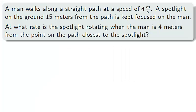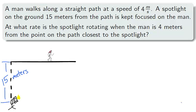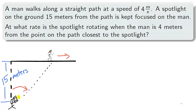Let's begin with a diagram. We begin with a man who's walking along a straight path. A spotlight on the ground 15 meters from the path is kept focused on the man. As the man walks to the right, the spotlight will be rotating with him. We solve this problem by asking our three questions.